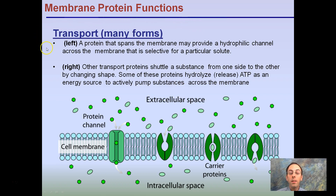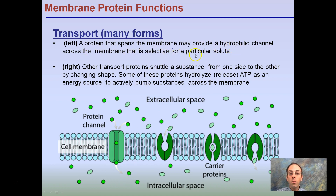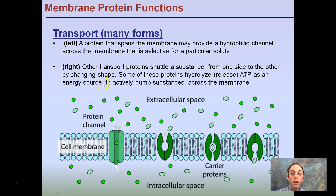One important function is transport, and it takes on many forms. On the left of this image, a protein spans the membrane from the extracellular space to the intracellular space. This may provide a hydrophilic channel across the membrane that's selective for a particular solute — in this case, allowing the small green molecules to come through. On the right-hand side, other transport proteins shuttle substances from one side to the other by changing shape, shown here open on top, then closed on both sides, then open only on the bottom.